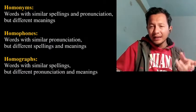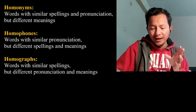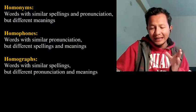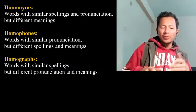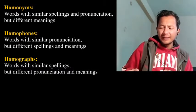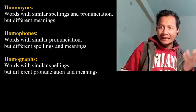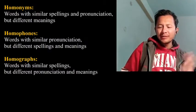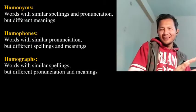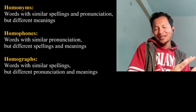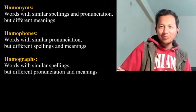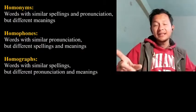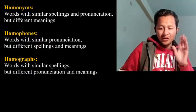So to recap: Homophones — spelling alag, pronunciation same. Jaisa D-I-E and D-Y-E. And basically dono ek prakar se Homonyms hi hain. Homonyms are basically jis mein similar sound, similar pronunciation, and similar spellings but completely different meanings. Right, so that's it.